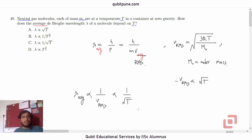So what is the correct option? The correct option is C: lambda inversely proportional to square root of T, or directly proportional to 1 over root of T. So that is question 48.